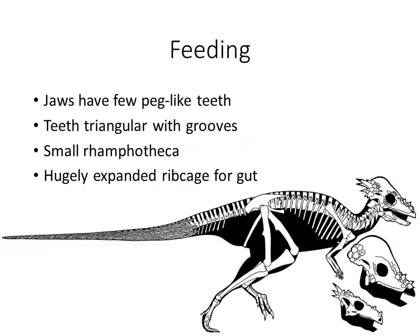For feeding, these guys have relatively few peg-like teeth. Looking into the skull, the teeth are aligned all along the jaw — more numerous than in Ankylosaurus or Stegosaurus. The teeth are triangular, characteristic of Ornithischians. They also have a hugely expanded rib cage, almost certainly to accommodate differentiation within the gut. These guys are functioning as efficient herbivores — acquiring plant material, chewing it up, and working on it in the gut.